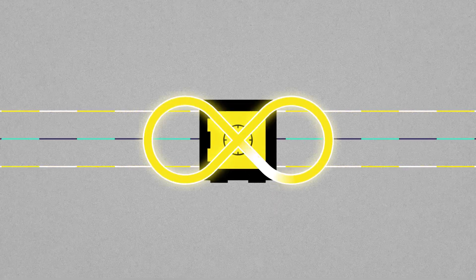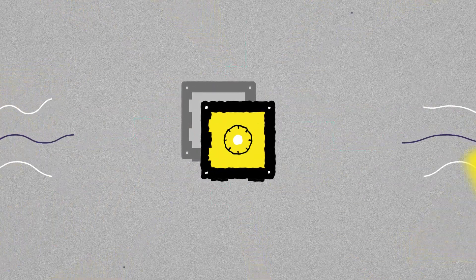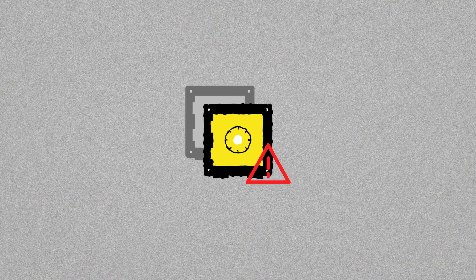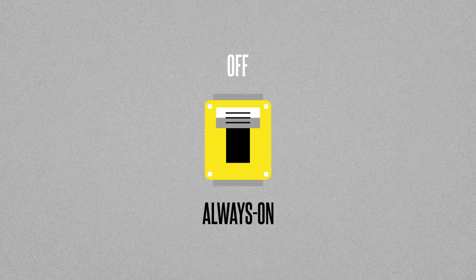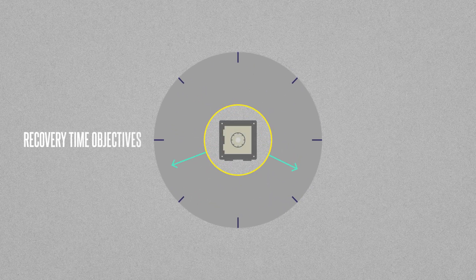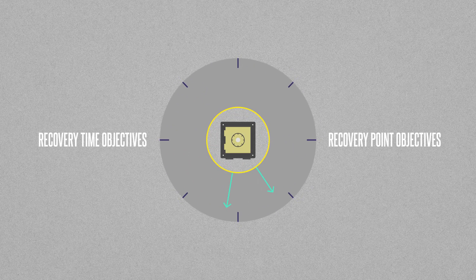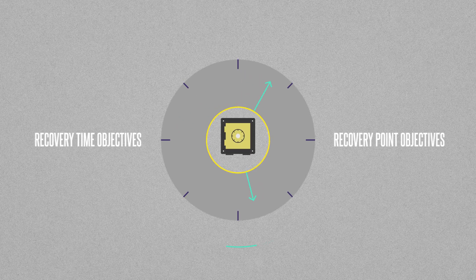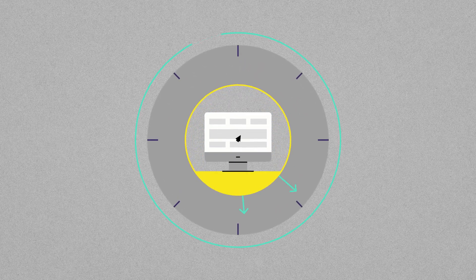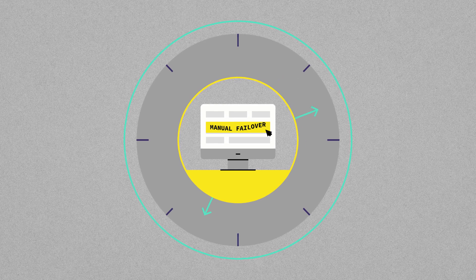That's why IT teams invest in technology they hope will minimize downtime and data loss during inevitable outages. These technologies claim to provide always-on or hyper-availability, but any kind of backup with recovery times and points automatically means reacting to downtime, not eliminating it. And manual failovers always involve a time gap between detection and response.